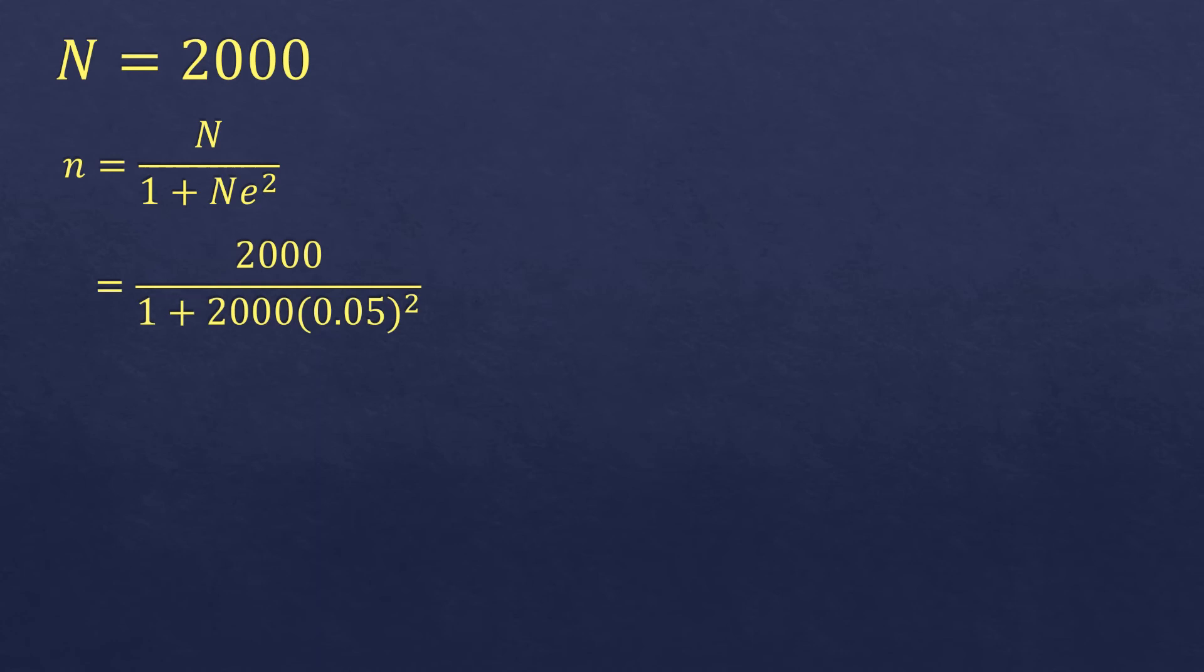Now let's make it a bit bigger. Let's say there are 2,000 in your population size. So we are going to substitute N by 2,000. Again, you are going to compute first the 0.05 squared, which is 0.0025. Then we are going to multiply 0.0025 by 2,000, it will be 5.